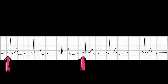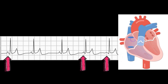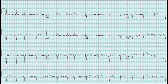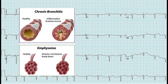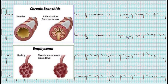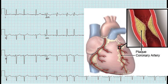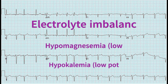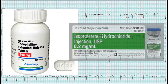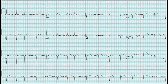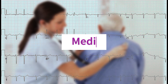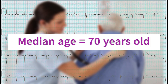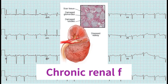The multiple discrete P-wave morphologies with variable PR intervals suggest atrial pacemaker activity originating from multiple ectopic foci within the atria. There are several causes of MAR, including lung disease such as chronic obstructive pulmonary disease, heart disease such as coronary artery disease, electrolyte imbalances such as hypomagnesemia and hypokalemia, and medication side effects such as theophylline and isoproterenol. It is more commonly seen in elderly patients, mainly appearing around the age of 70, or those with other underlying medical conditions such as chronic renal failure.